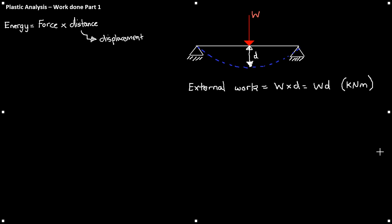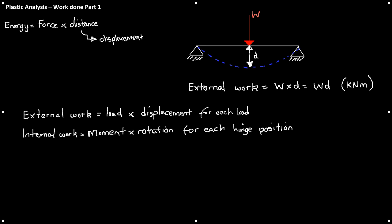So, let's write this down. The external work equals the load times the displacement for each load. The internal work equals the moment times the rotation for each hinge position.